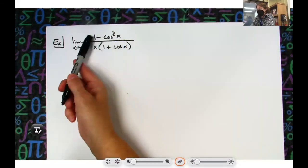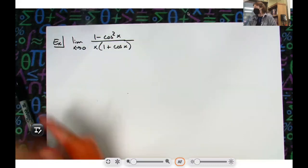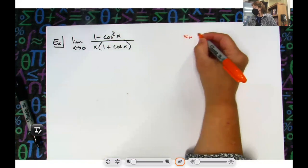I'm hoping you can look at that numerator and tell me what it's equivalent to. Say it again, Dane? Sine squared x. All right, I'm hoping we're to that place because of that property identity.